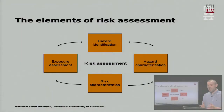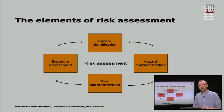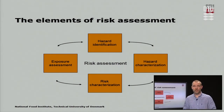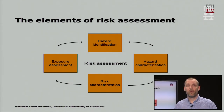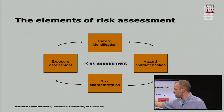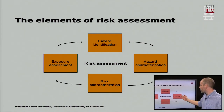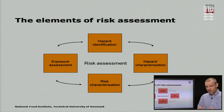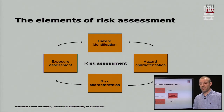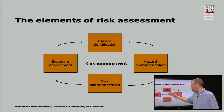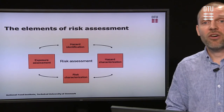The different elements of risk assessment start with hazard identification — knowing which hazard you are working with, often decided by risk managers identifying the problem they want to solve. Then you perform exposure assessment to predict the number of pathogens in the food item just before consumption. You perform hazard characterization focusing on how the consumer responds to exposure to the hazard. And then you bring together the exposure with the hazard characterization — the dose response — and estimate the risk.